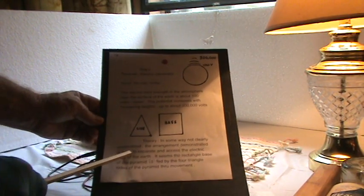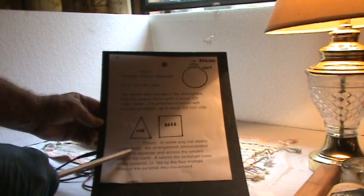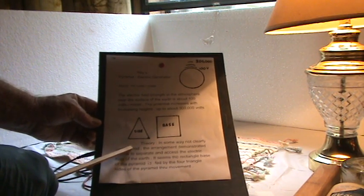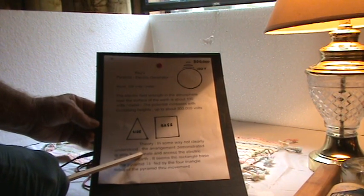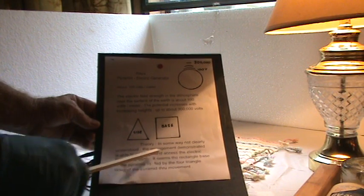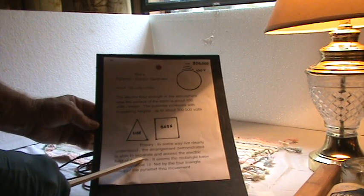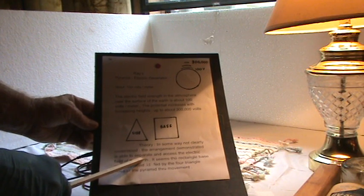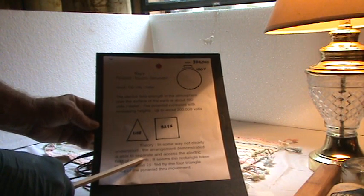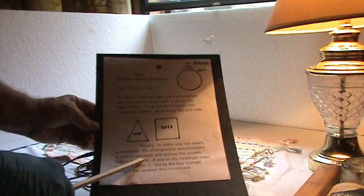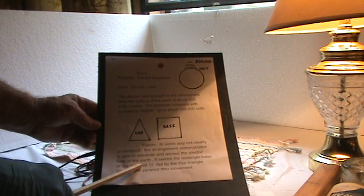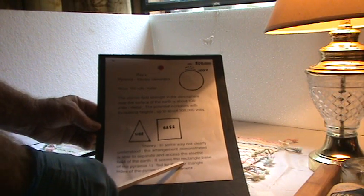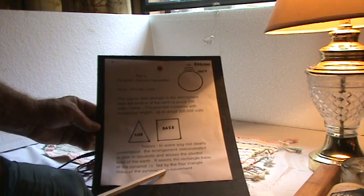The theory, in some way not clearly understood, is that the arrangement demonstrated is able to separate and isolate and access the electric field of the earth. I cannot see any other candidates for this happening. I'll be eliminating static charge, that'll be one of the likely things that comes to mind first. It seems the rectangular base of the pyramid is fed and charged by the four triangular sides of the pyramid through movement.